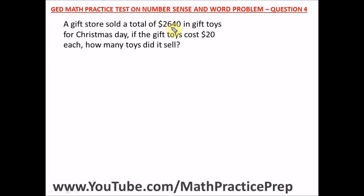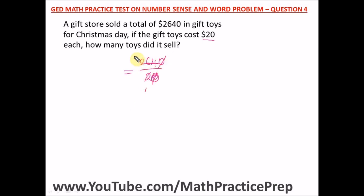The store sold $2,640 in gift toys and each toy costs $20, so we divide 2,640 by 20. Cancelling zeros, we divide 264 by 2, which gives us 132. The store sold a total of 132 gift toys.